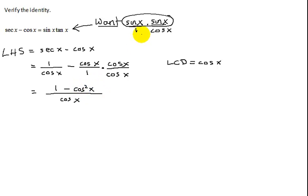And now look at where you're trying to go. Well I've got my cosine x in the denominator. I want a sine squared x in the numerator. So at this point you should go, oh I know what to do now.